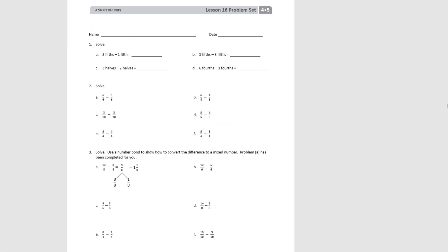Let's do some problems in our problem set. For number 1, we're going to solve using units — pause the video and do A through D. The answers are 2 fifths, 2 fifths, 1 half, and 3 fourths. For 2a, we have 5 sixths take away 3 sixths. Our units are the same — we started with 5, took away 3, so now we have 2 sixths left.